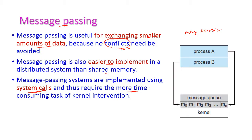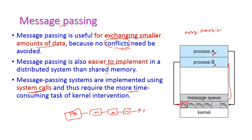Here we have process A and process B. If process A wants to send some messages to process B, it will send the message to the kernel, and then the kernel will send this message to process B. So process A sends a message to the kernel, and the kernel transfers this message to process B. This is how message passing takes place.